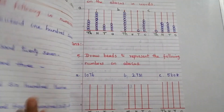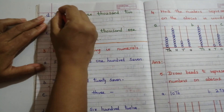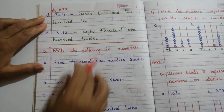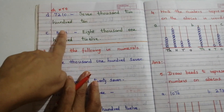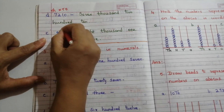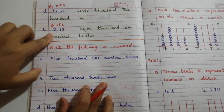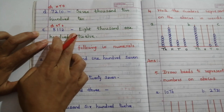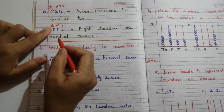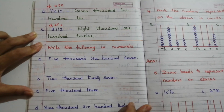Problem D: 7210 — write 'seven thousand two hundred and ten.' Problem E: 8112 — write the place values ones, tens, hundreds, thousands; writing the place value makes it very easy to read. So 8112 is 'eight thousand one hundred and twelve.'